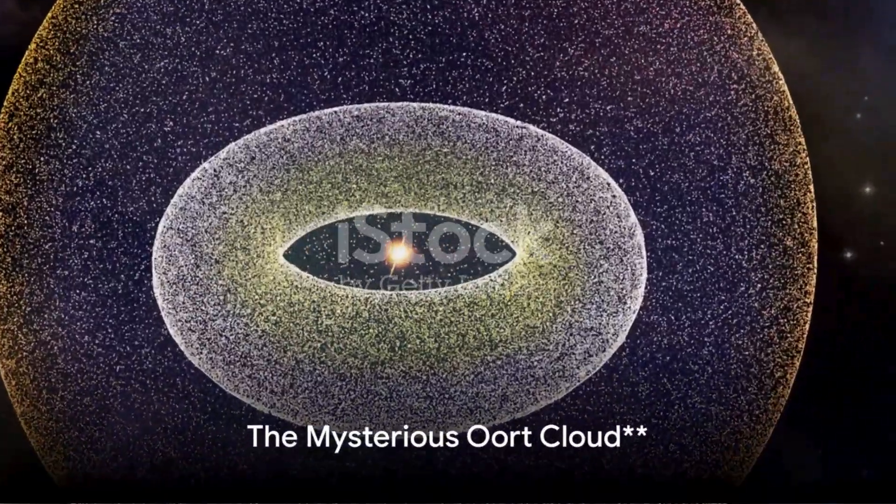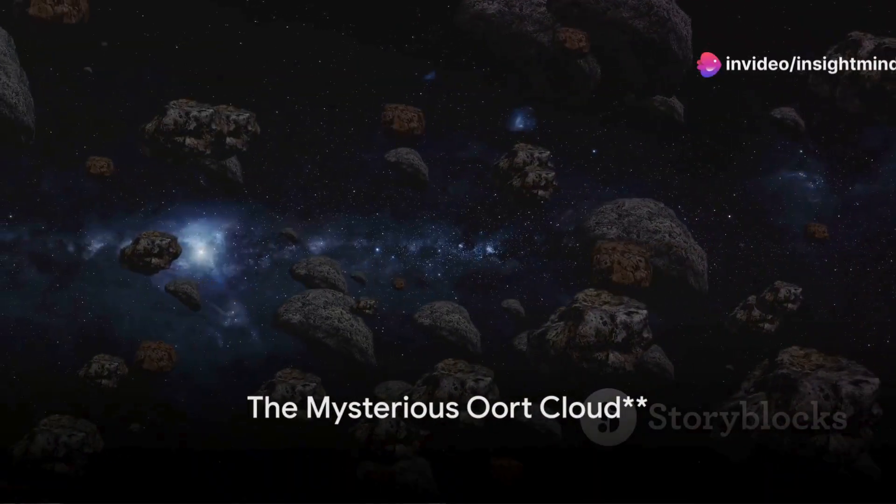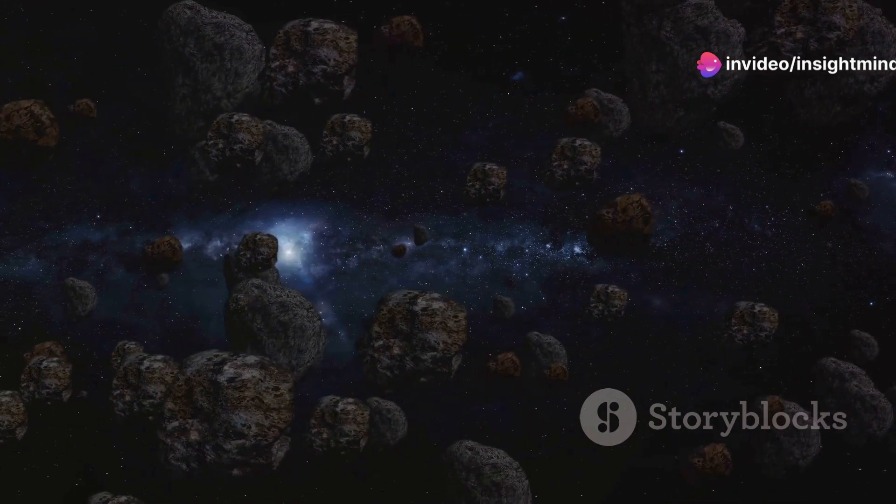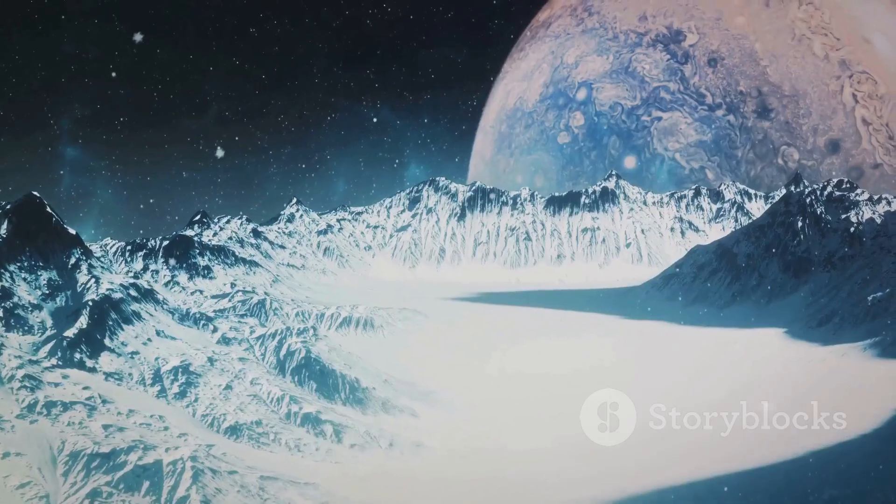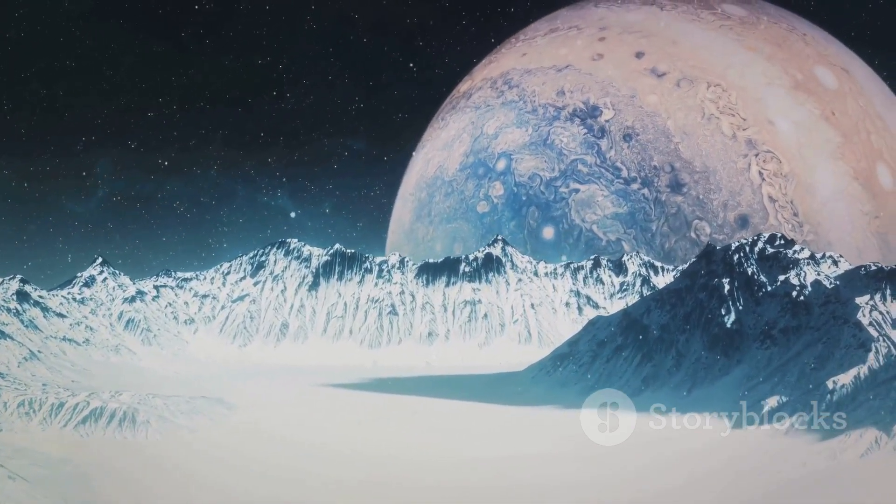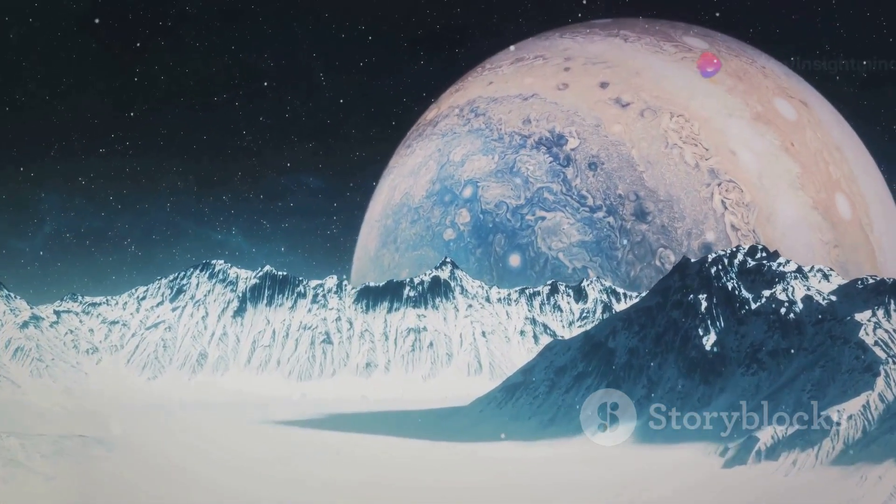Beyond the trail blazed by the Voyagers lies the enigmatic Oort Cloud. Envision a colossal sphere of icy debris encircling our solar system far beyond the orbit of Neptune. This distant cloud is a silent witness to the birth of our solar system, composed primarily of frozen water, ammonia, and methane.